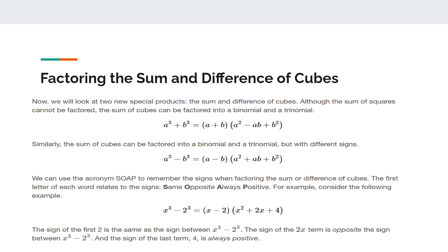We can use the acronym SOAP to remember the signs when factoring the sum or difference of cubes. The first letter of each word relates to the signs: Same, Opposite, Always Positive. For example, x cubed minus 2 cubed equals x minus 2 times x squared plus 2x plus 4. The sign of the first term is the same as the sign between the original cubes, which is negative. The 2x term is opposite, so it is positive. The last term, 4, is always positive.